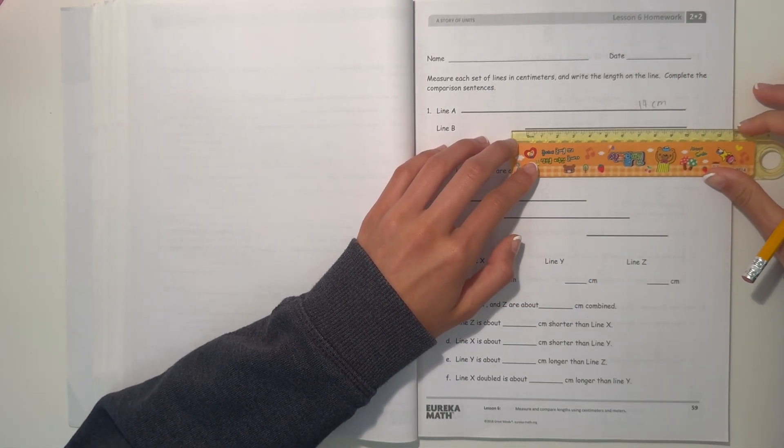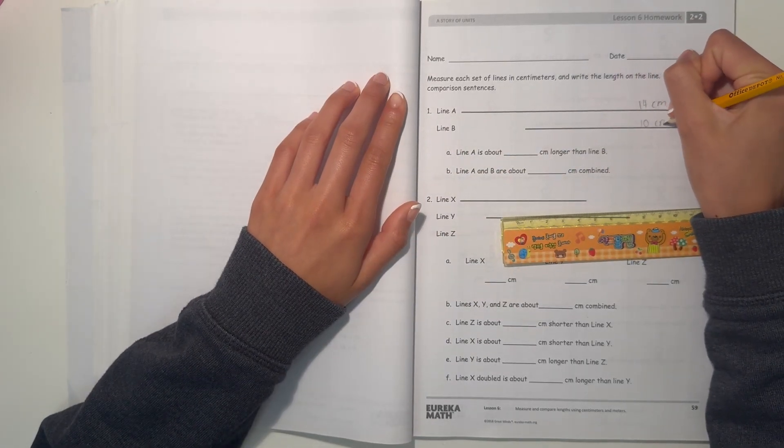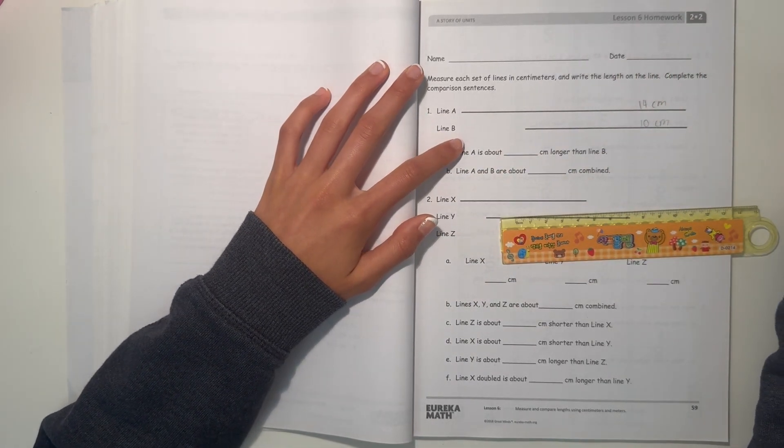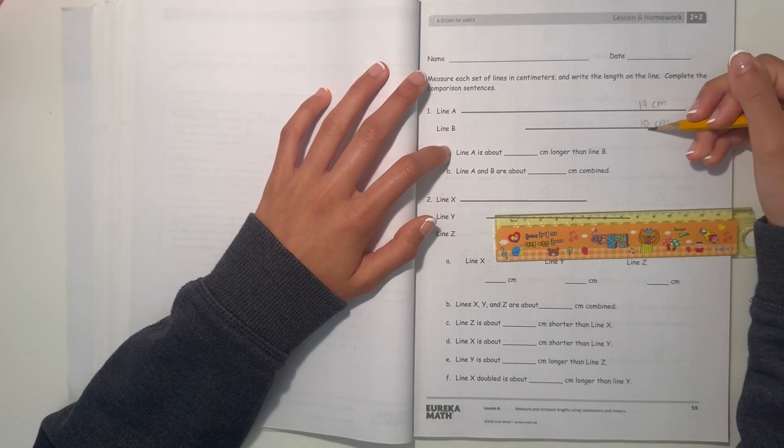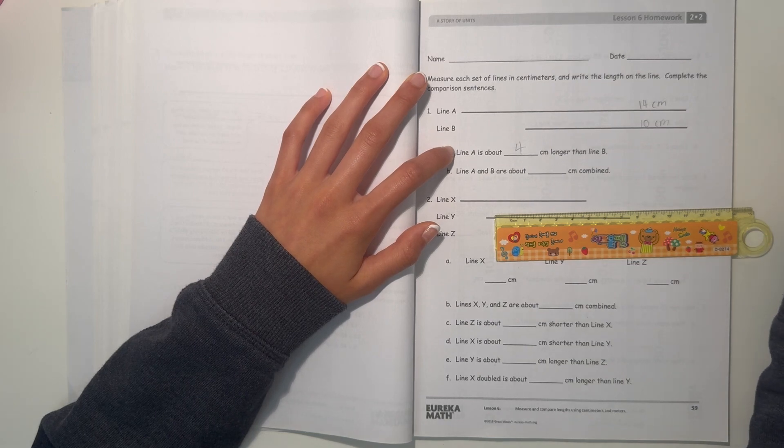Line B, start at 0, it's 10 centimeters. So line A, how much longer is it? 14 minus 10 is 4, so line A is about 4 centimeters longer than line B.